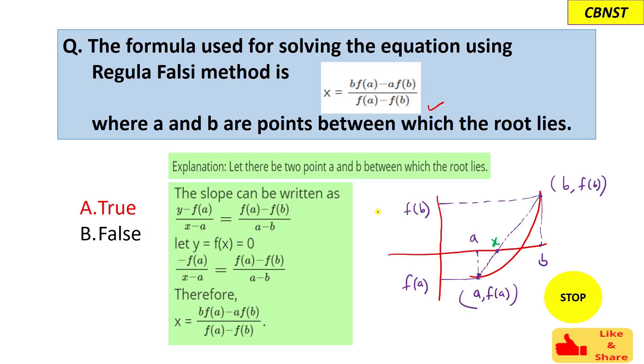Let me show you. This red colored f(x) is a function, and there are two points a and b. This is (a, f(a)) and this is (b, f(b)). This is the straight line that is joining a and b. This point x is the root of this function according to the Regula Falsi method.